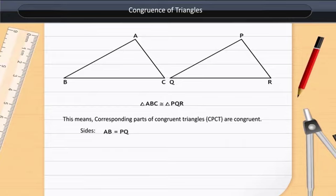In the figure given here, the sides AB and PQ are equal, BC and QR are equal, and AC and PR are equal.